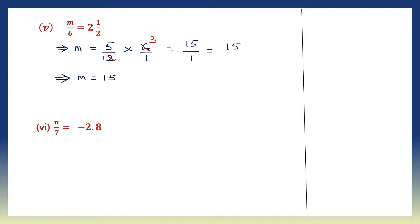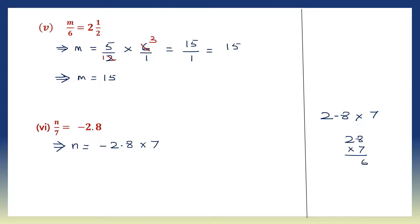Question 6: n by 7 equals minus 2.8. Let's find the value of n. We leave n on the left hand side, minus 2.8 on the right hand side, and transpose 7 — it becomes multiplication. So let's multiply 2.8 into 7. Ignore the point: 28 into 7. 7 eights are 56, carry 5. 7 twos are 14 plus 5 is 19. Now put back the point — there is one decimal place, so the answer is 19.6. The value of n is minus 19.6.